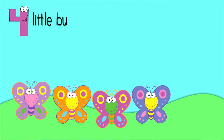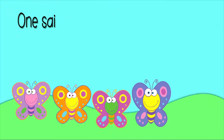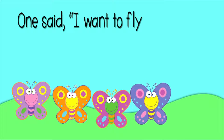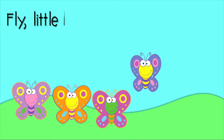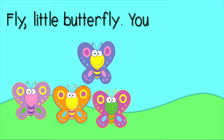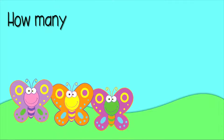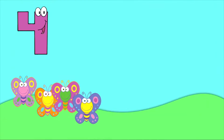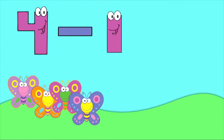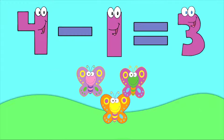Four little butterflies rested on the ground. One said, I want to fly all around. Fly, little butterfly, you know how. How many butterflies are left now? Four butterflies minus one butterfly equals three butterflies.